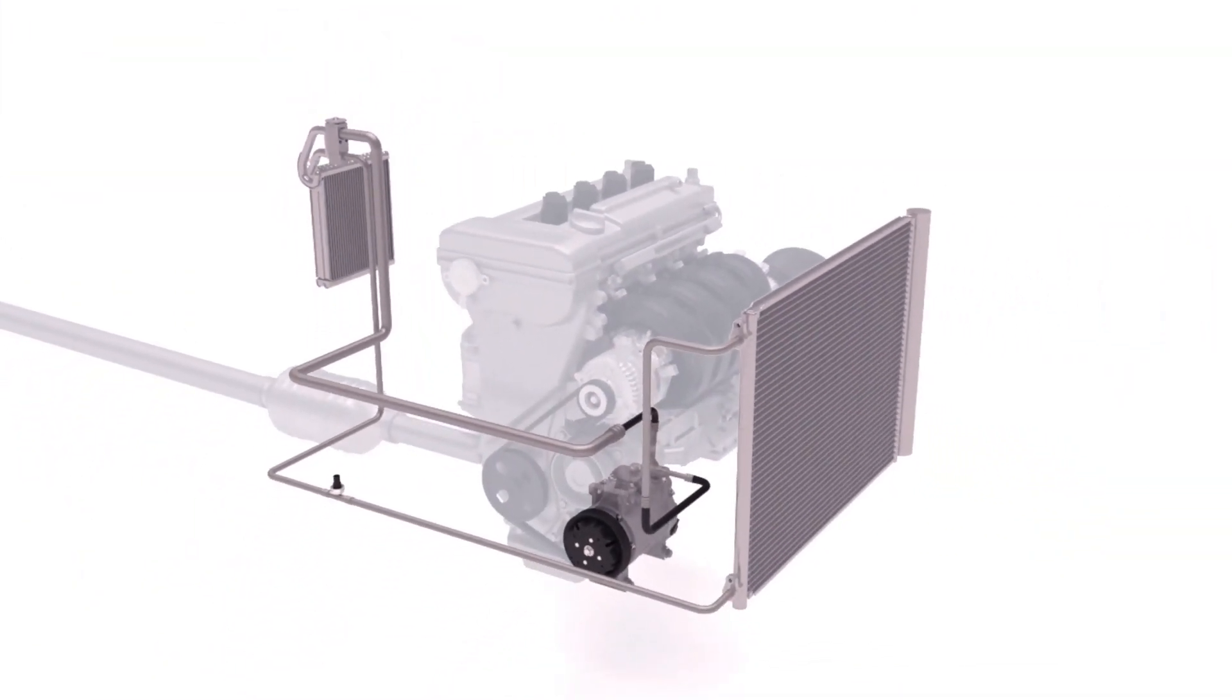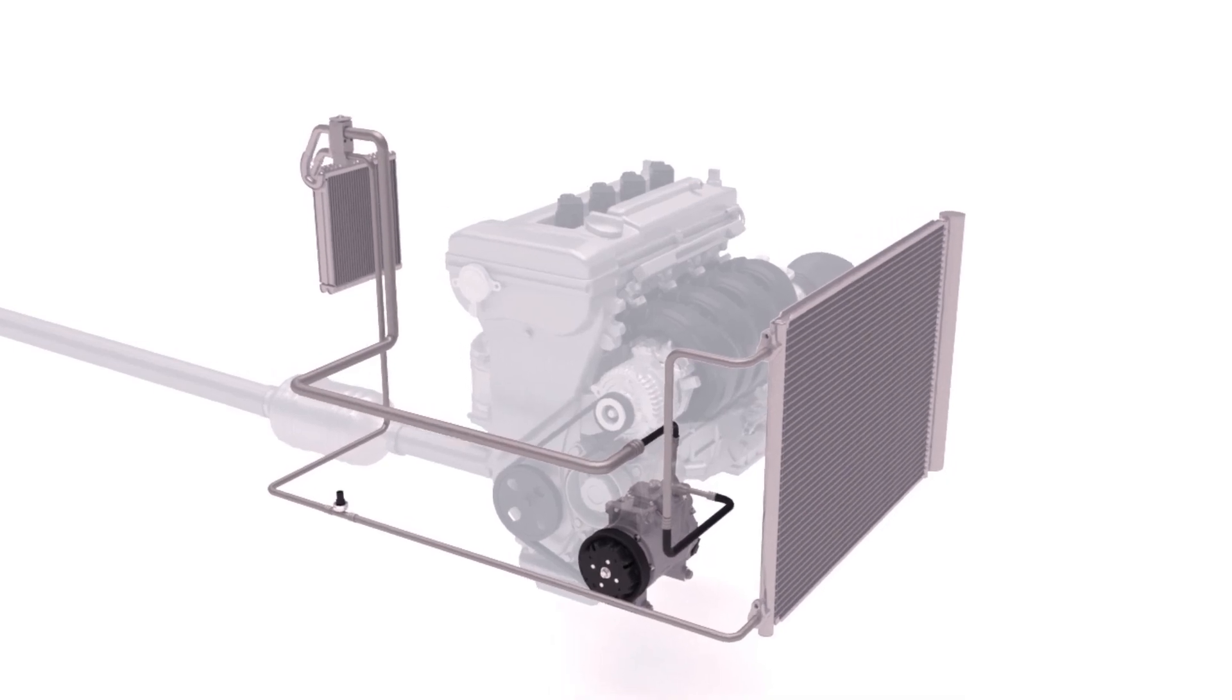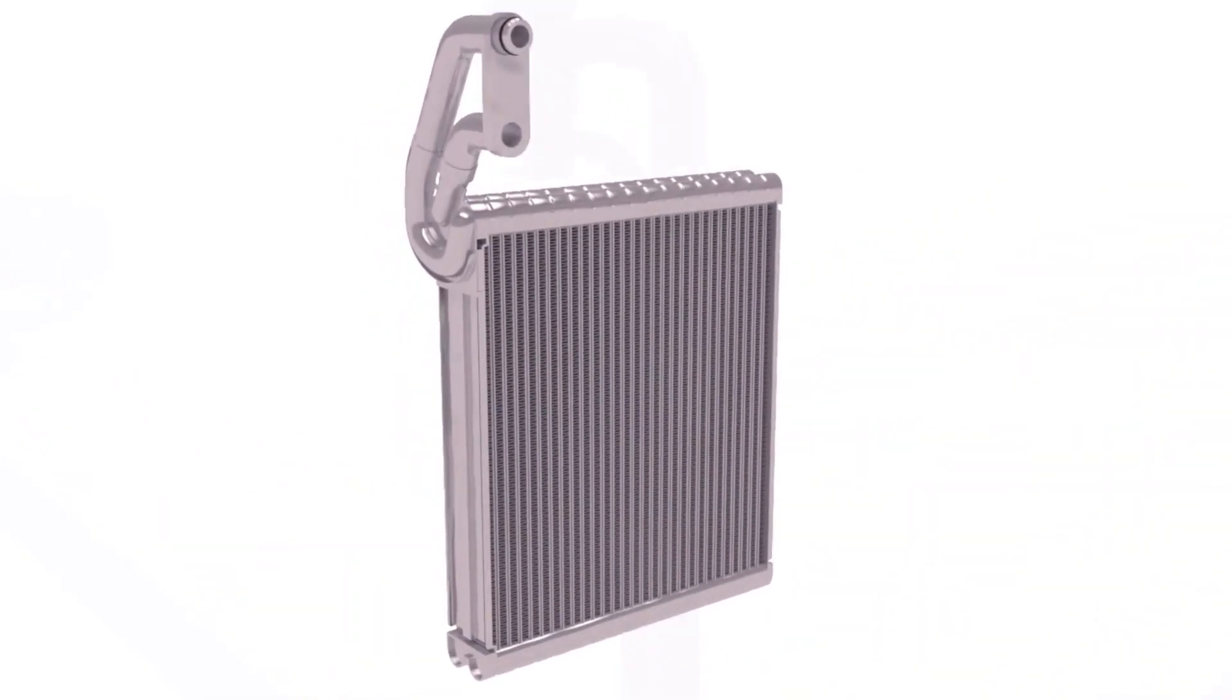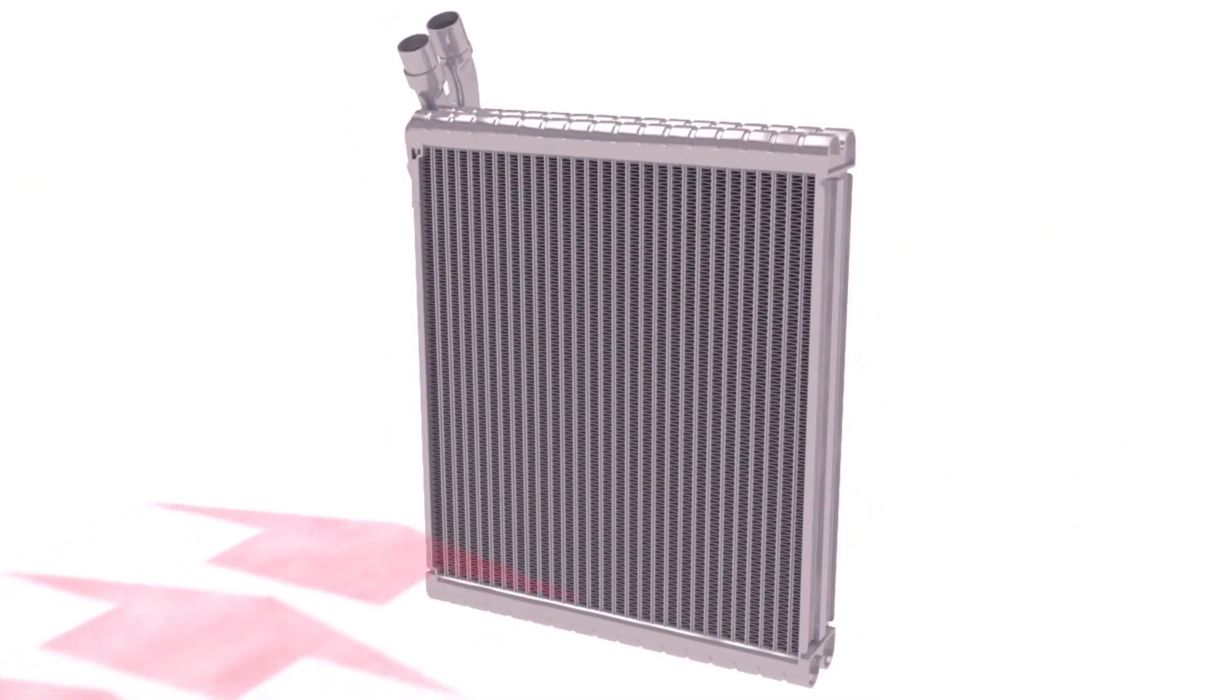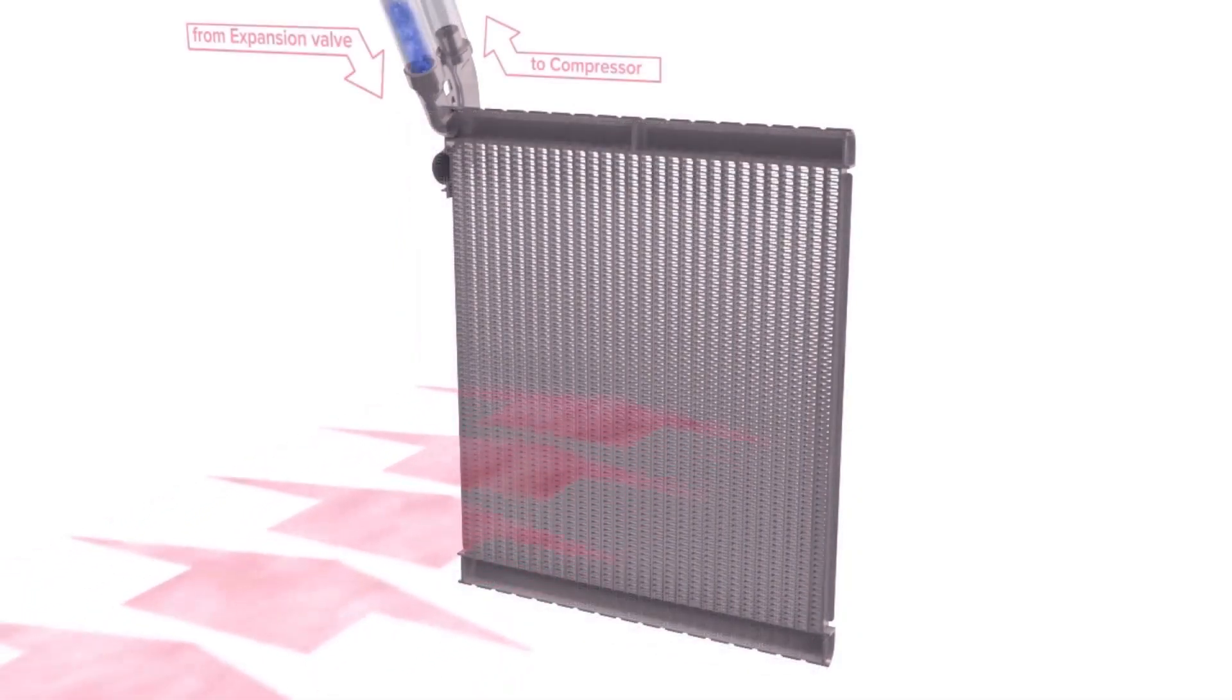The low-pressure mist refrigerant now flows into the last major component of the air conditioning system, the evaporator, which is located within the air conditioning unit. The evaporator consists of a tank, tubing, and fins that are exposed to the air in the passenger compartment.